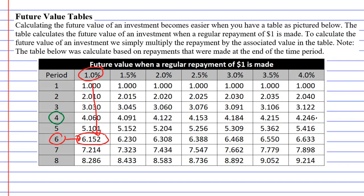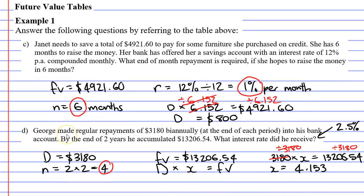So, X is $13,206.54 divided by $3,180 comes to 4.153. And when we go back to our table, remembering that we've got four time periods, this is where you will find 4.153. So, our interest rate must be 2.5%. Now, I've just created a little bit of room here. Our interest rate is 2.5%, but remember that this is biannually. So, it's 2.5% biannually, or if it was yearly, it's 5% per annum, because we simply doubled our percentage.